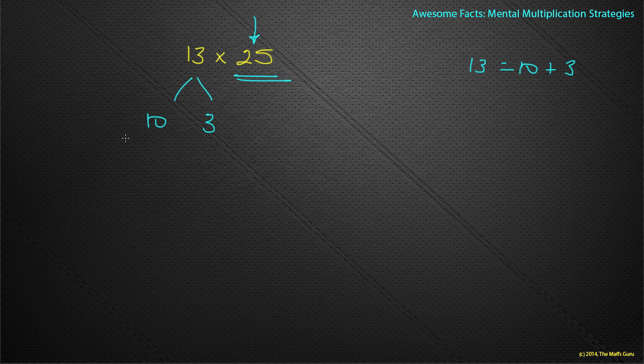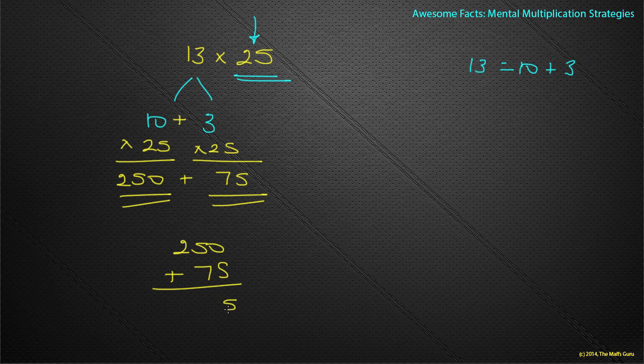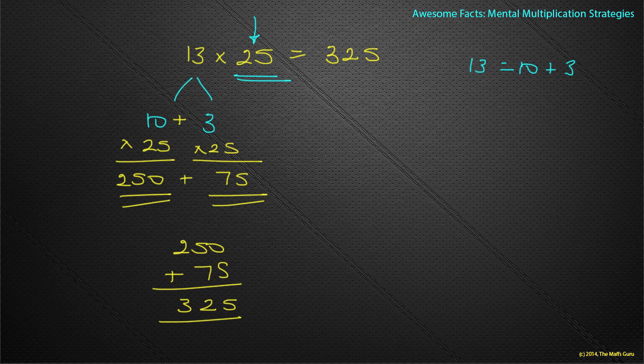So here is my 10 and here is my 3. So rather than think of 13 times 25, what I'm going to do is I'm going to think of 10 times 25 and 3 times 25. Well what is 10 times 25? Hold on, I know how to do this. 25 times 10 is 250, and 3 times 25 is 75. And so what do I do? Well 10 plus 3 is 13, so 250 plus 75 must give me the right answer, and it actually does. So 250 plus 75 gives me 325. There is my answer.